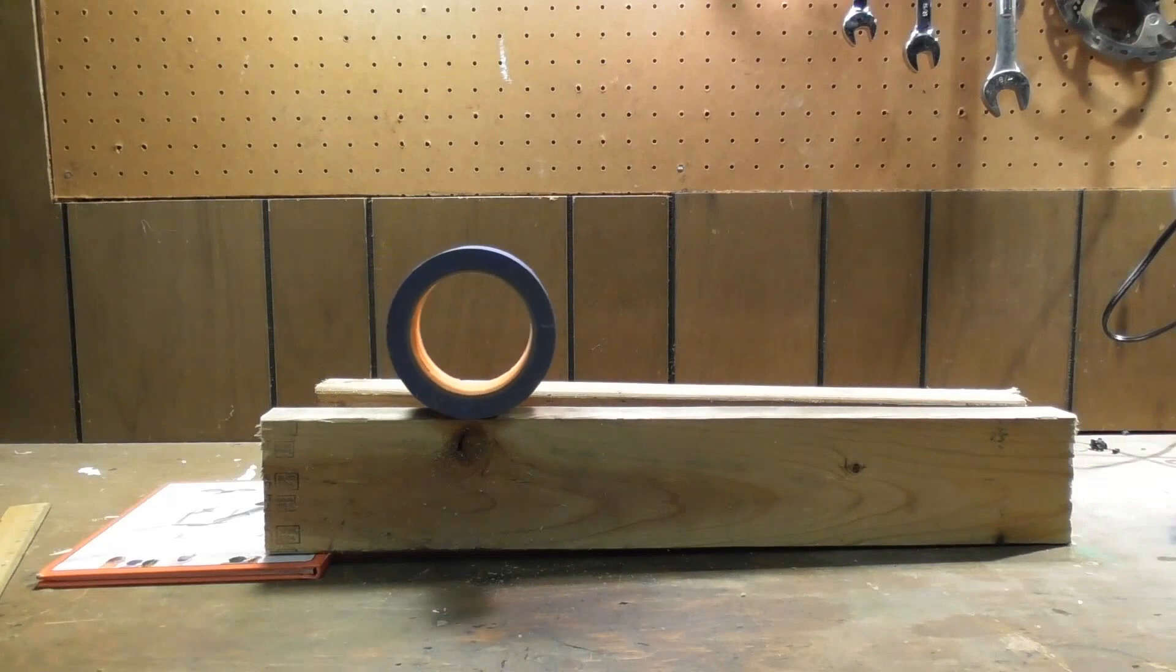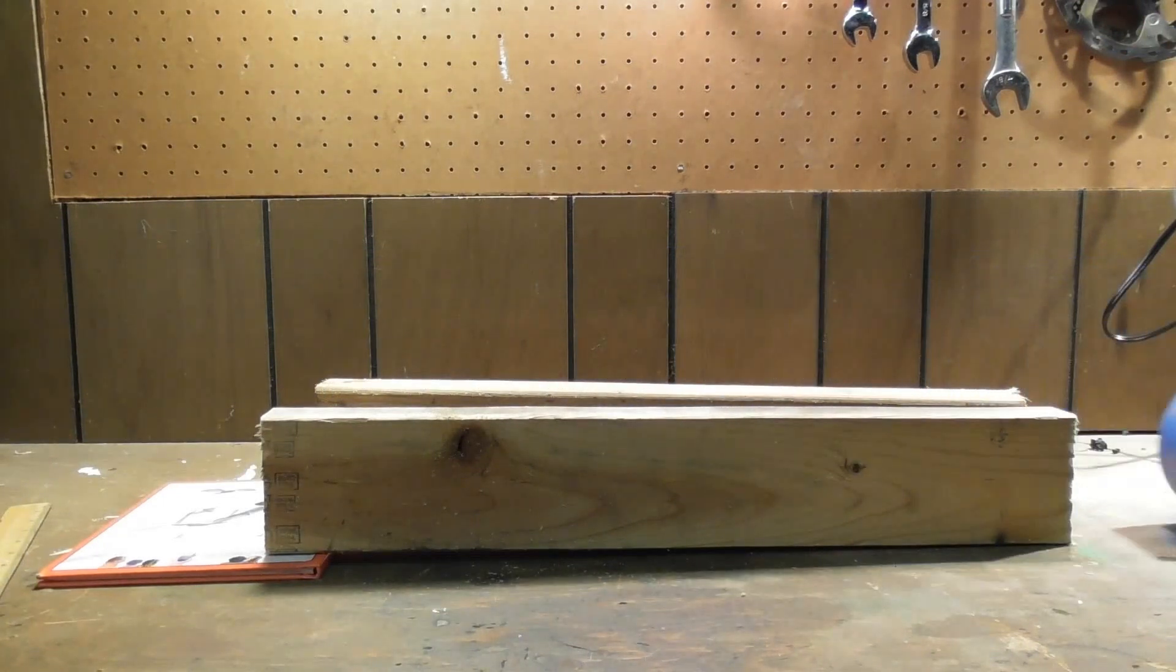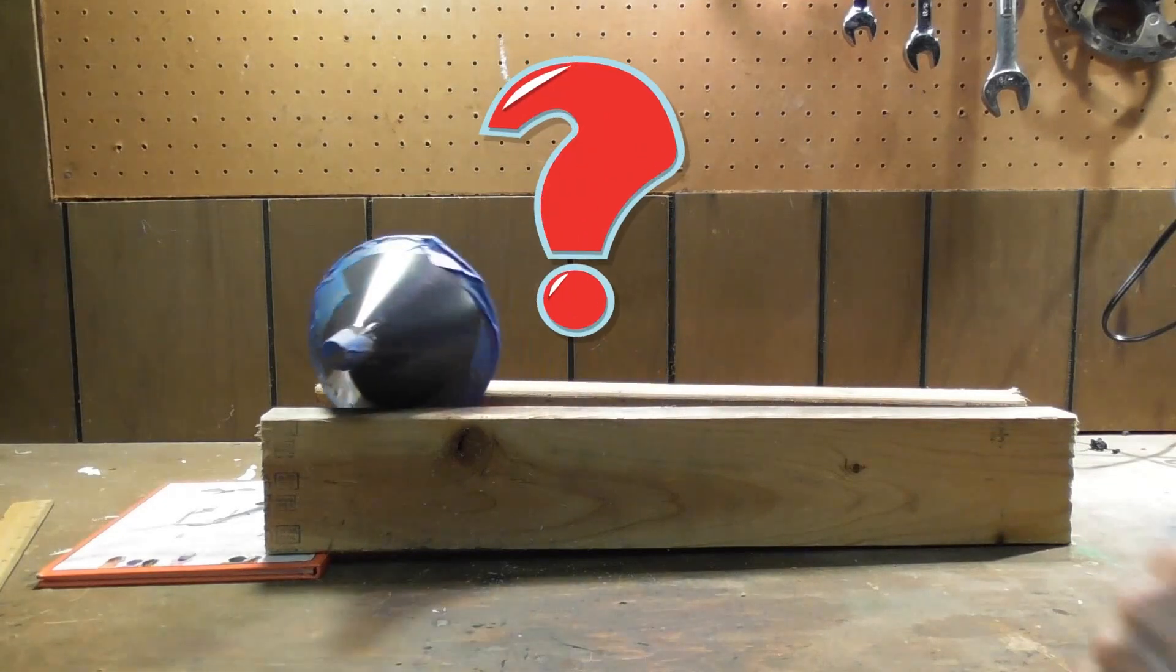Let's look at this again. The tape rolls downhill and the cone goes uphill. Why?